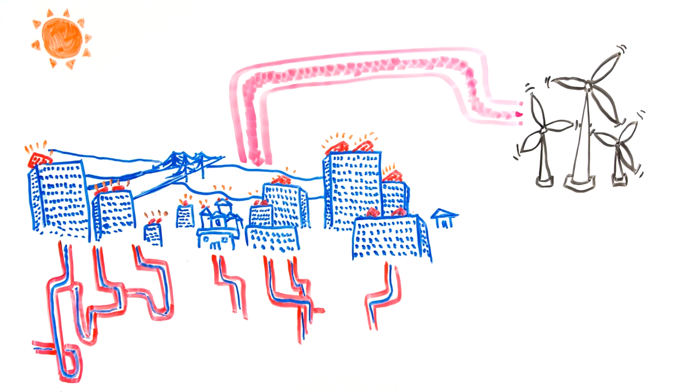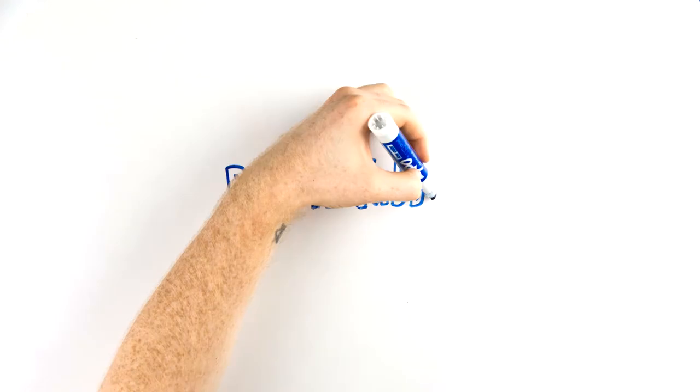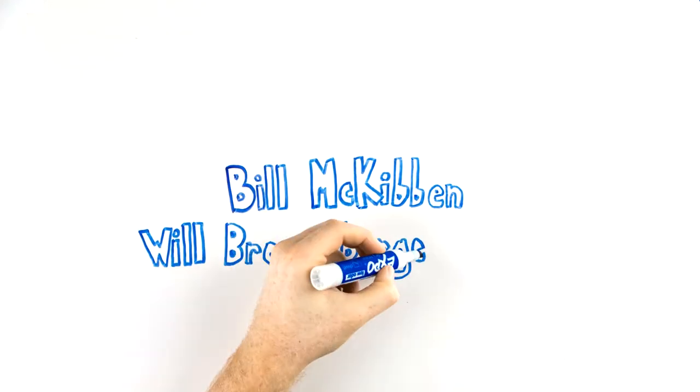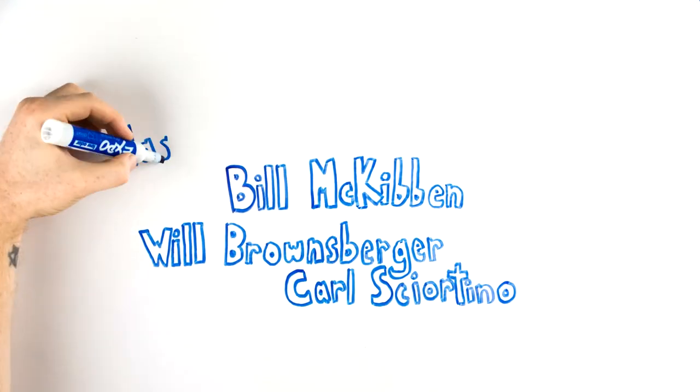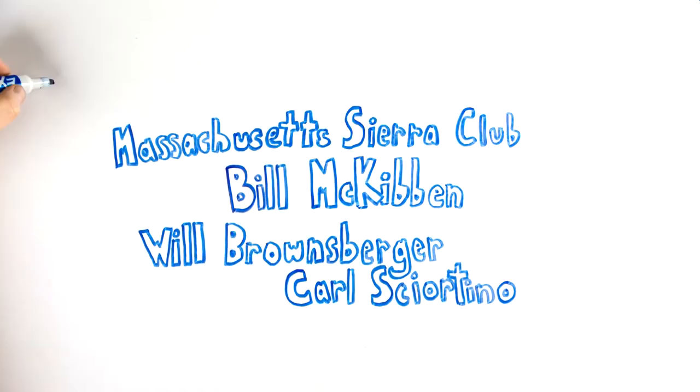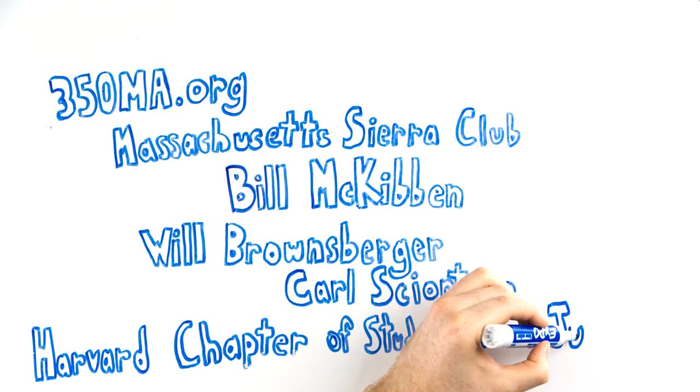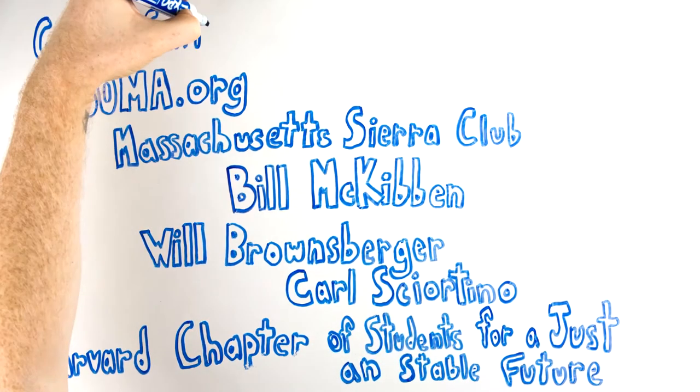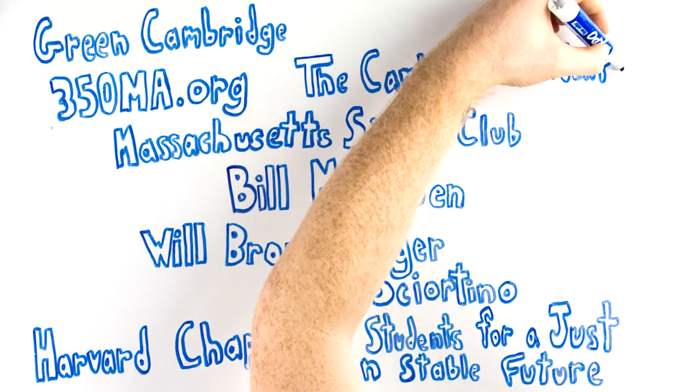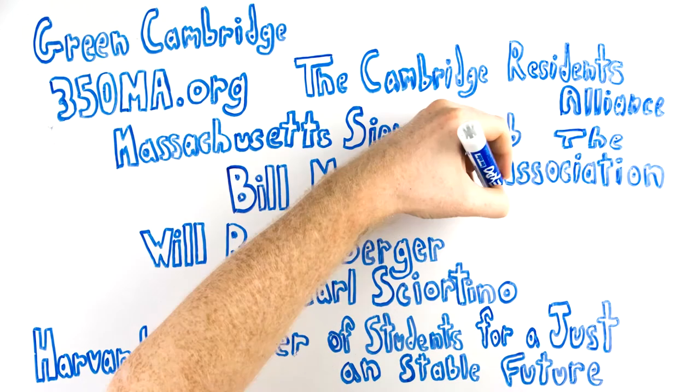Net Zero has already been endorsed by Bill McKibben, State Senator Will Brownsberger, State Representative Carl Shortino, the Massachusetts Sierra Club, the Cambridge Node of 350MA.org, the Harvard Chapter of Students for a Just and Stable Future, Green Cambridge, the Cambridge Residence Alliance, the Association of Cambridge Neighborhoods, and over 200 Cambridge residents and local experts.